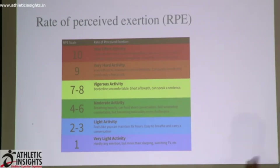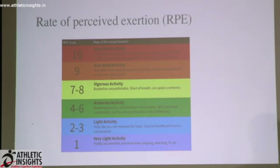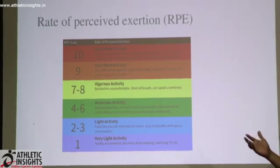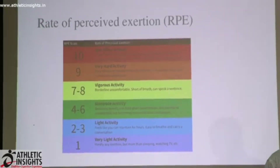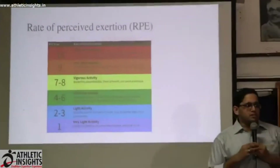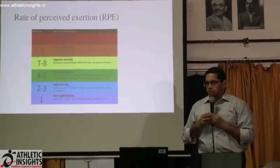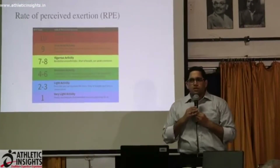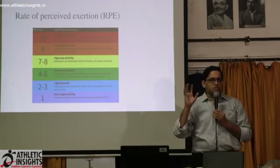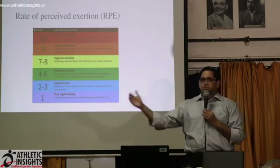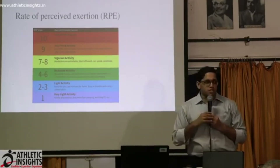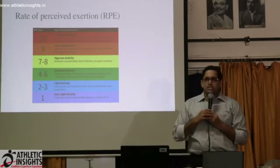For example, if I make someone stand here and give a 2 kg dumbbell in one hand and a 3 kg dumbbell in the other hand, ask him to close his eyes and tell me the weight difference — I doubt the answer I will get is 1.5 times. Because we don't perceive effort in terms of numbers; we don't perceive that 3 kg is 1.5 times of 2 kg.